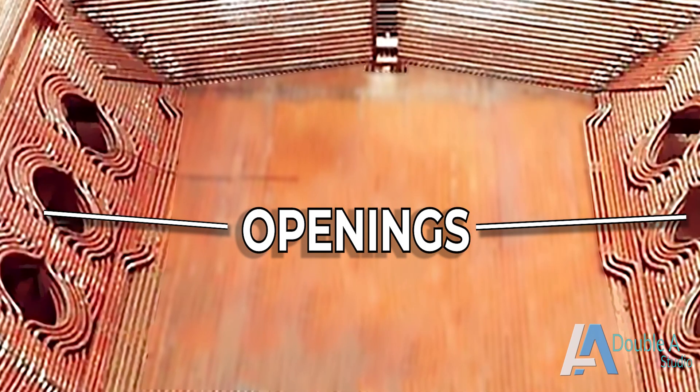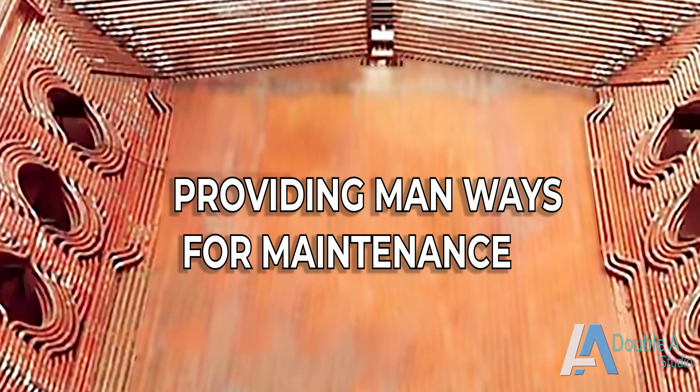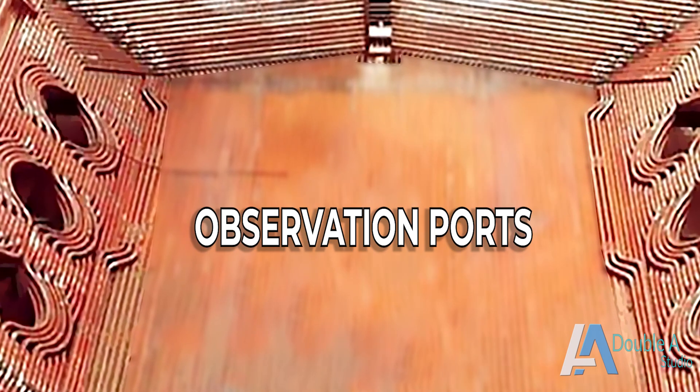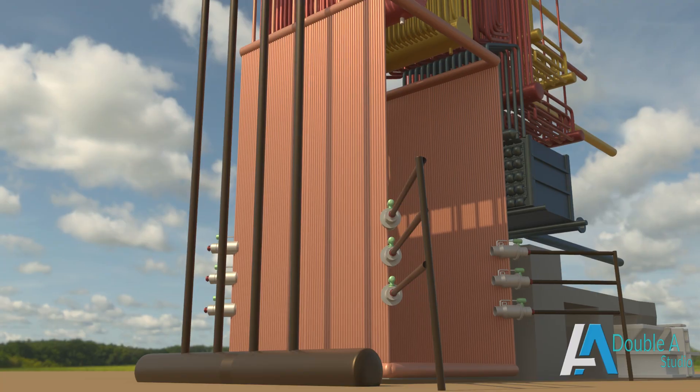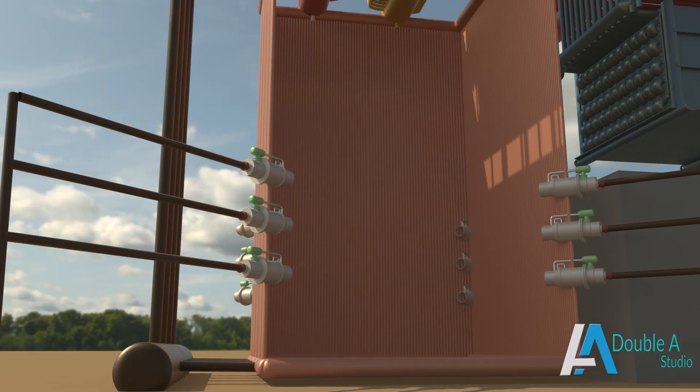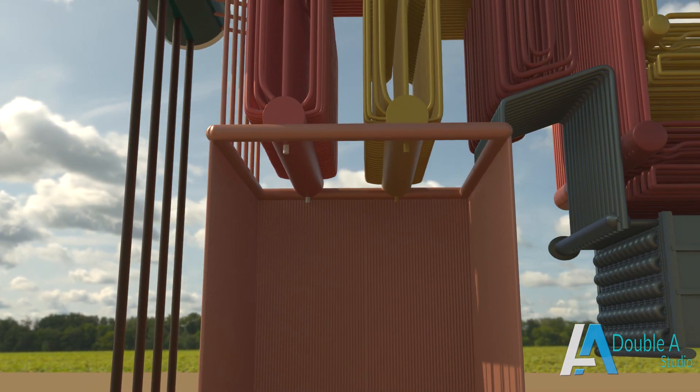It has some openings too for fixing burners and providing man ways for maintenance, observation ports, and openings for camera and soot blowers. The water wall creates a lining inside the entire boiler. Its complete structure looks like a room which surrounds the furnace.